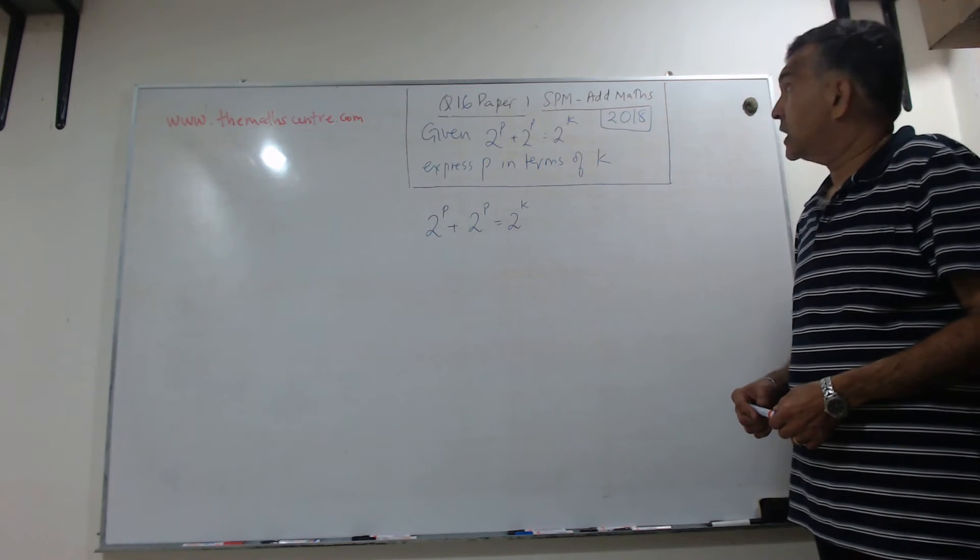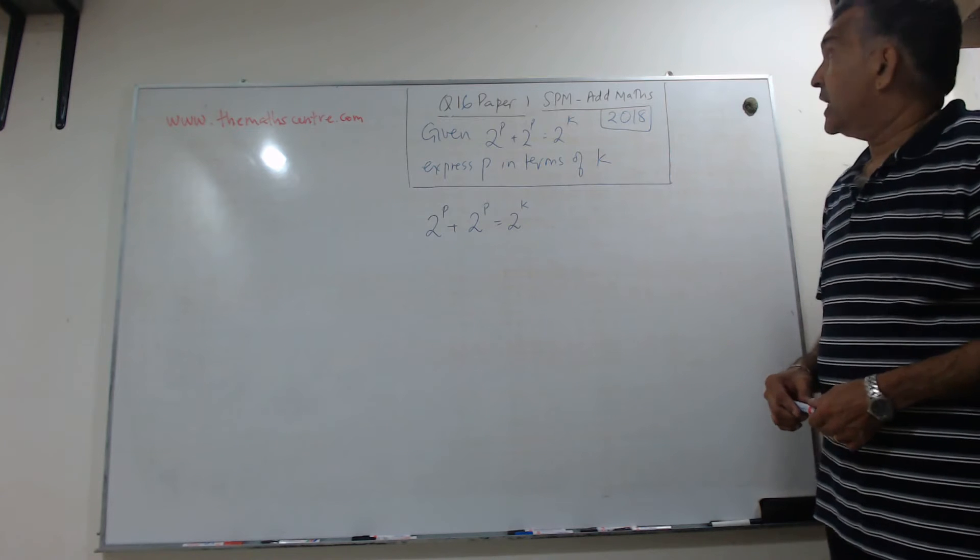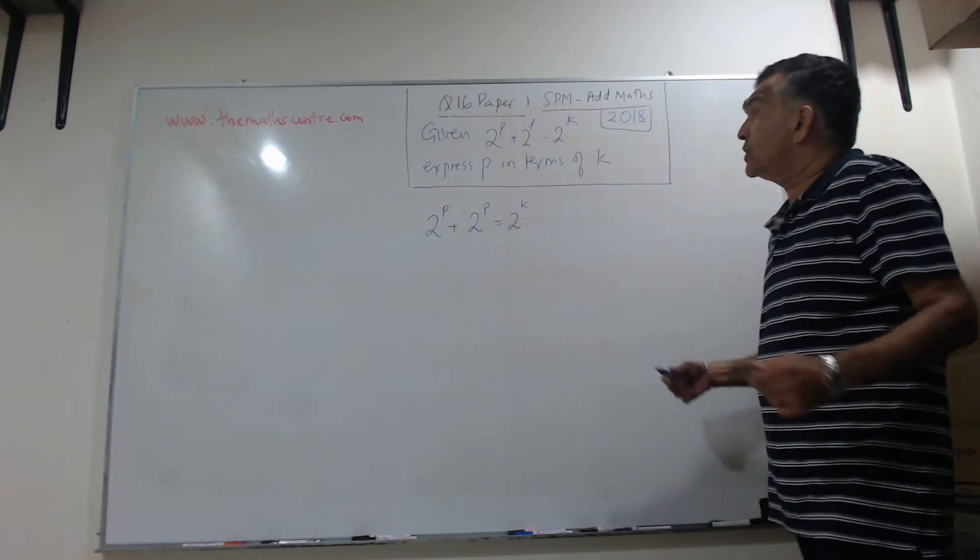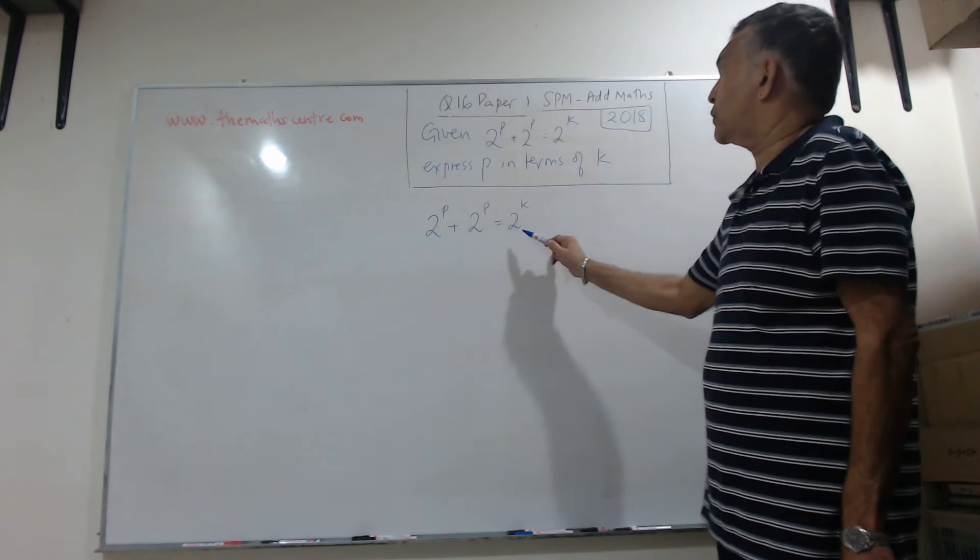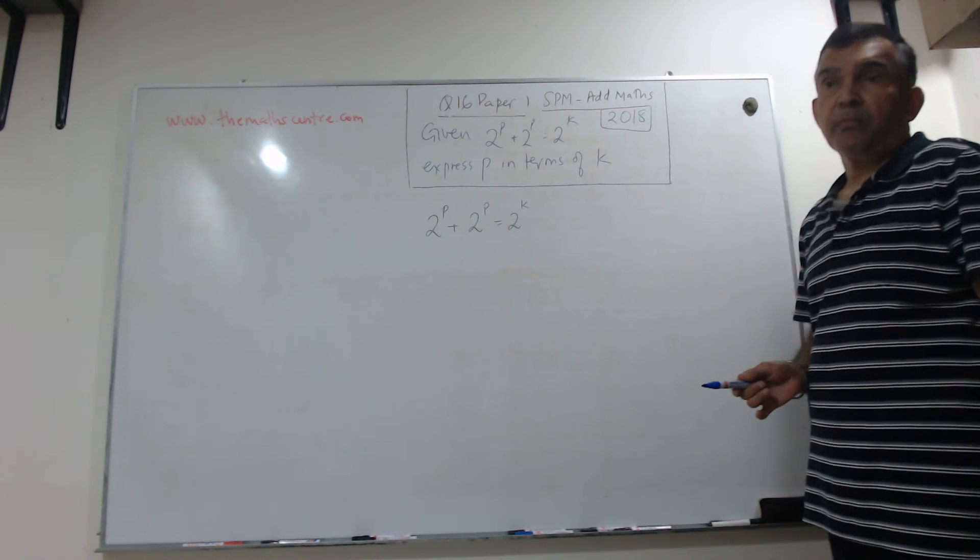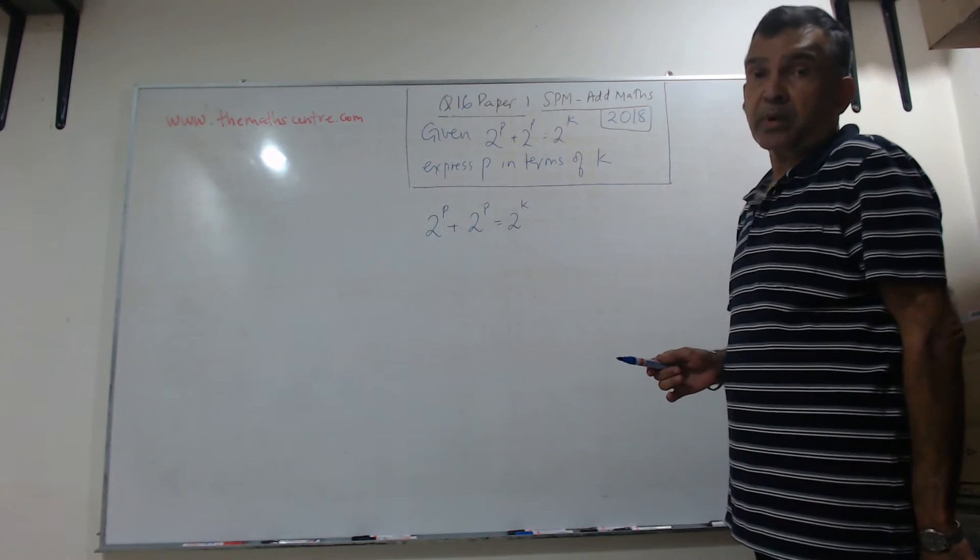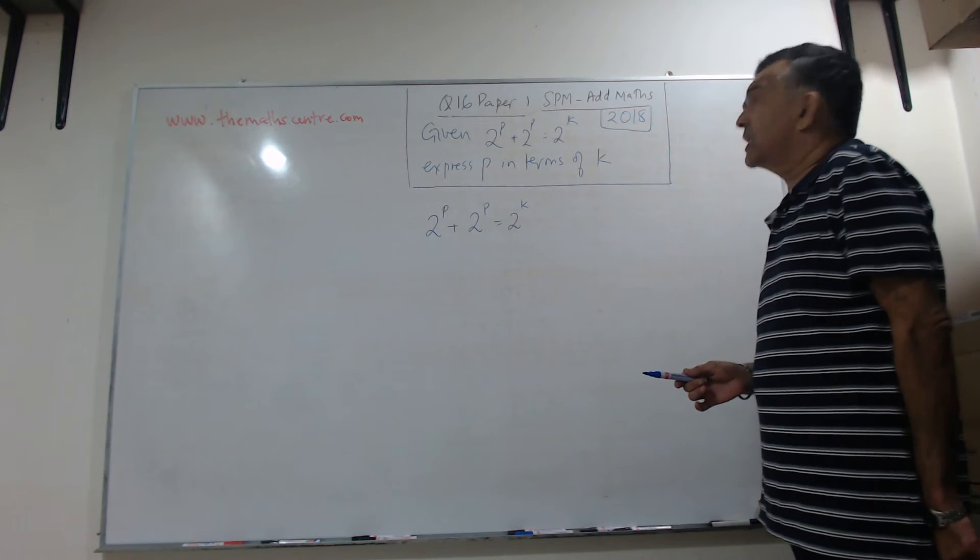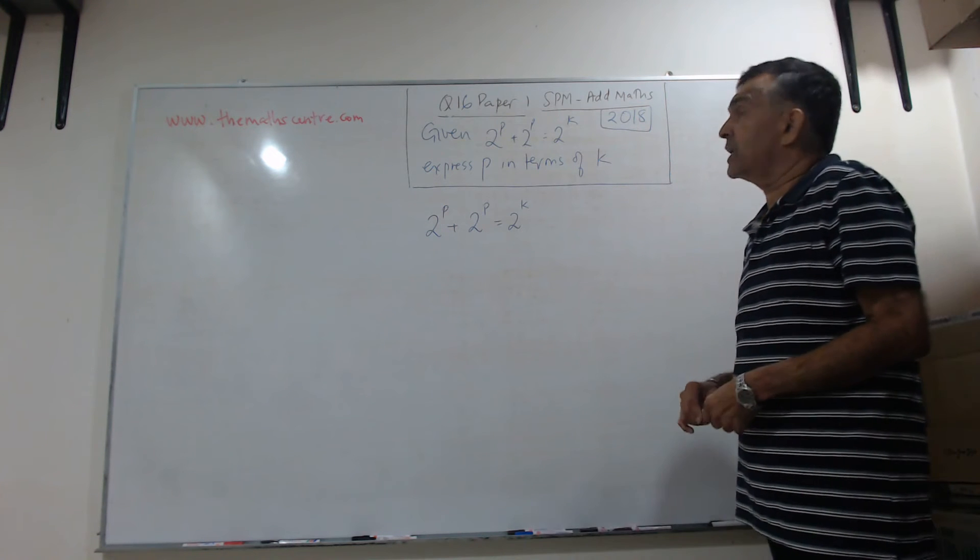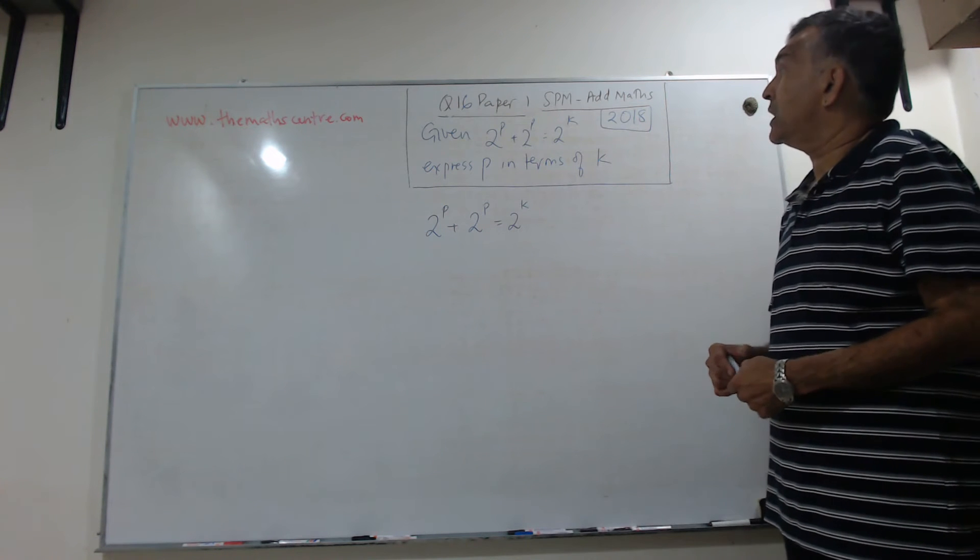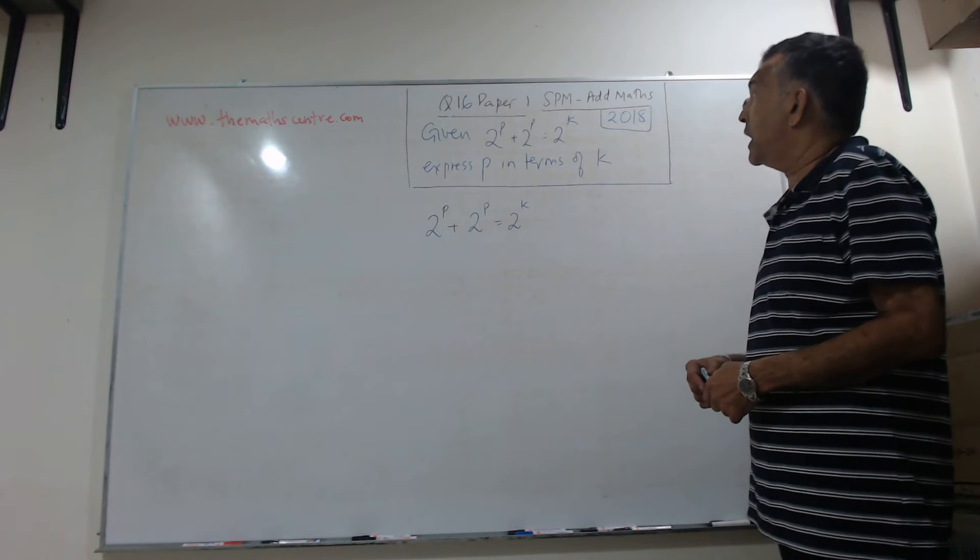This question is question number 16. It's given 2 raised to the p plus 2 raised to the p equals 2 raised to the k. This is what we call an index equation and we have to express p in terms of k. Ini adalah satu persamaan index, kita dikehendaki ungkapkan p dalam sebutan k.